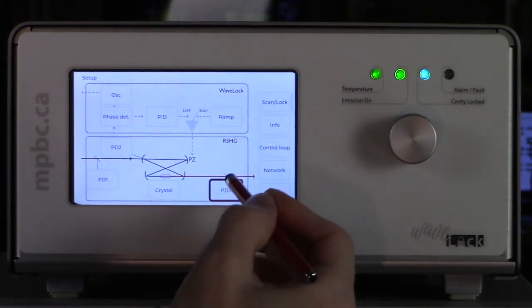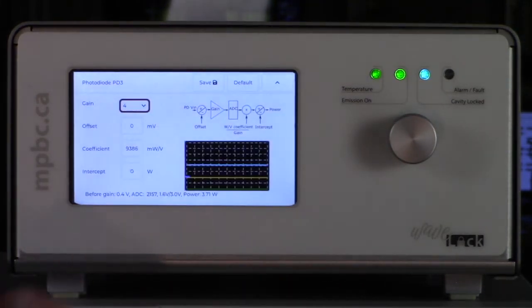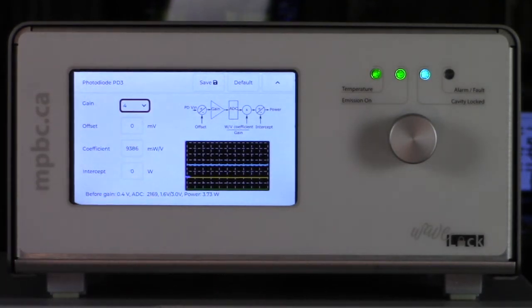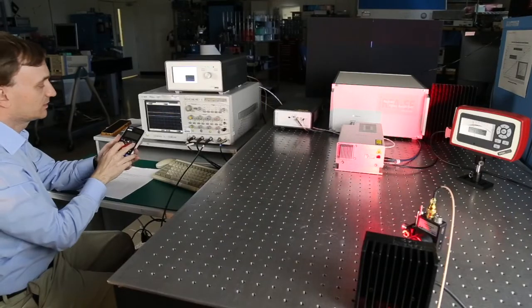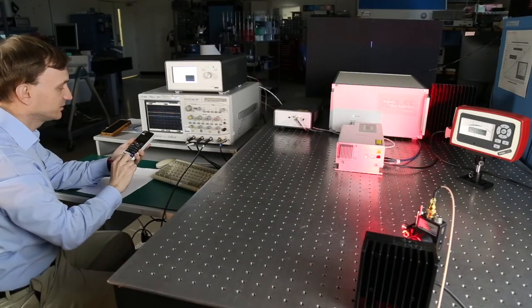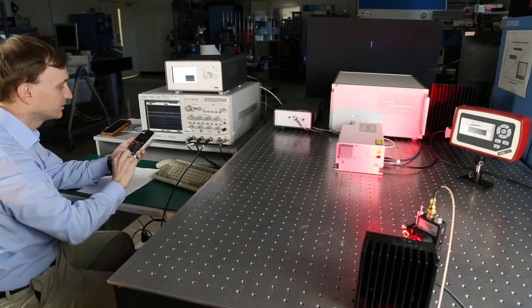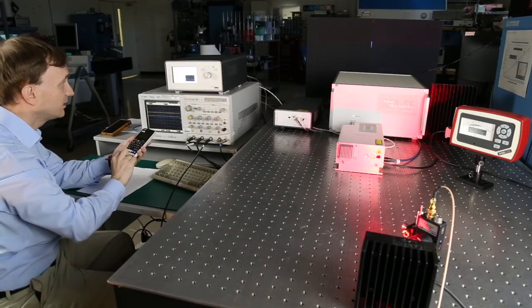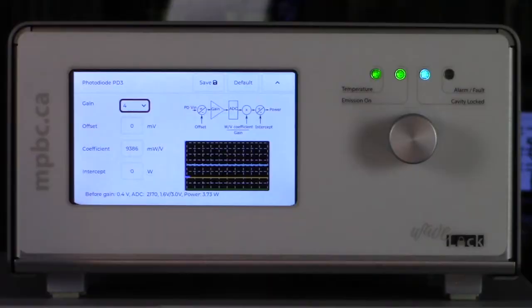I go back to this menu and I change this coefficient. This is something you normally wouldn't have to do, it is already preset at the factory. So I calculate the fraction that I need and I compute the new value for the coefficient.